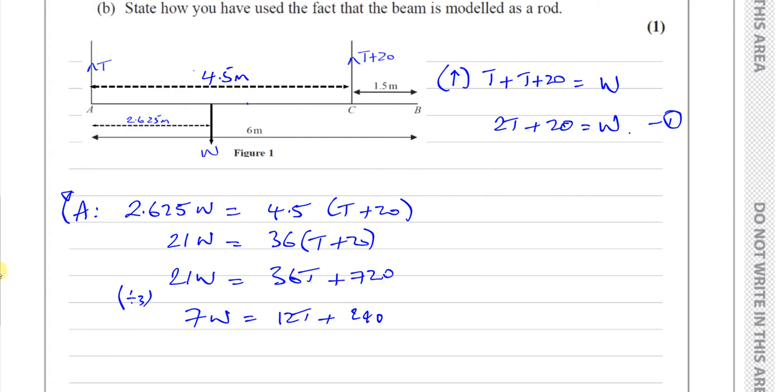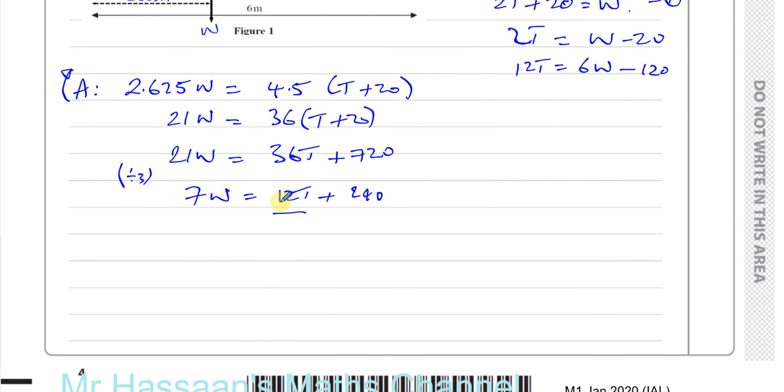So we could say that we know that 2T is equal to W minus 20. And here I need 12T. So 12T is equal to multiply by 6, 6W minus 120. So I can replace this by 6W minus 120. I'm just using substitution, actually, to solve it. Because I can see here I've got 12T. And here I know what 2T is. So I can make that into 12T and substitute that. So I've got 7W is equal to 6W minus 120 plus 240. Because 12T is 6W minus 120. Take the W's together. That's W is equal to 240 minus 120 is 120. So W is equal to 120 N.